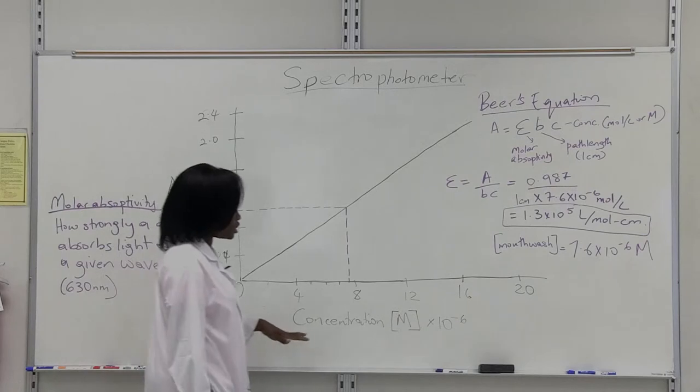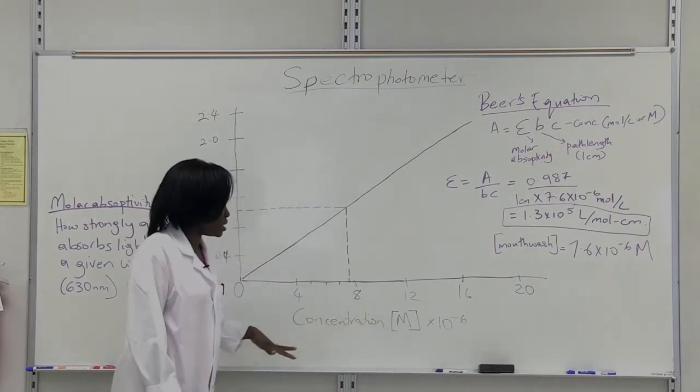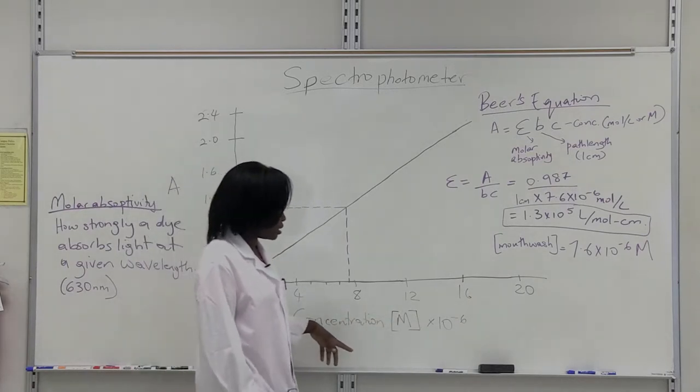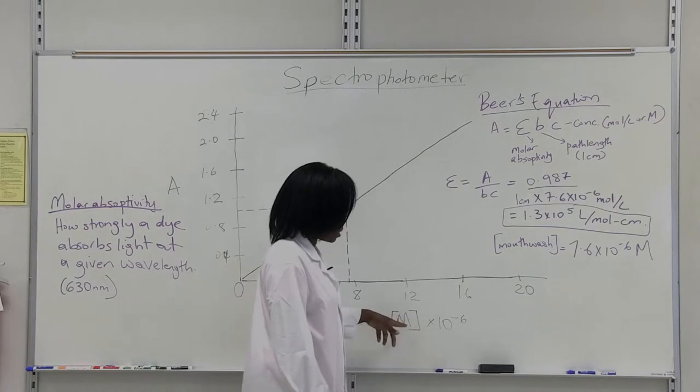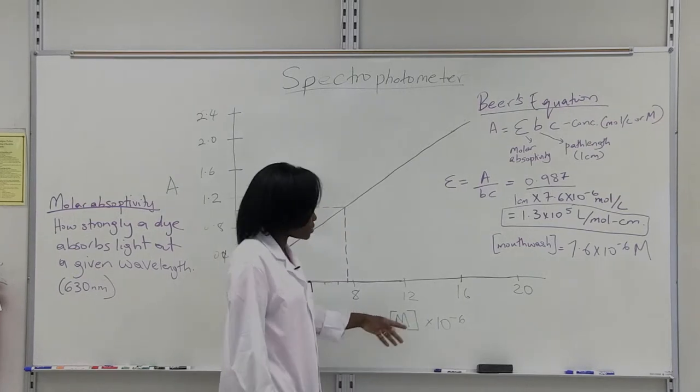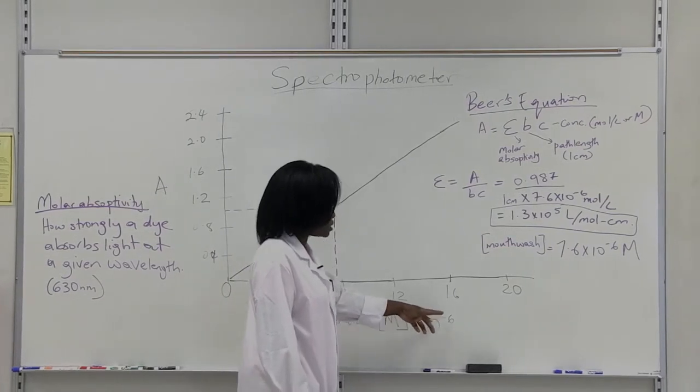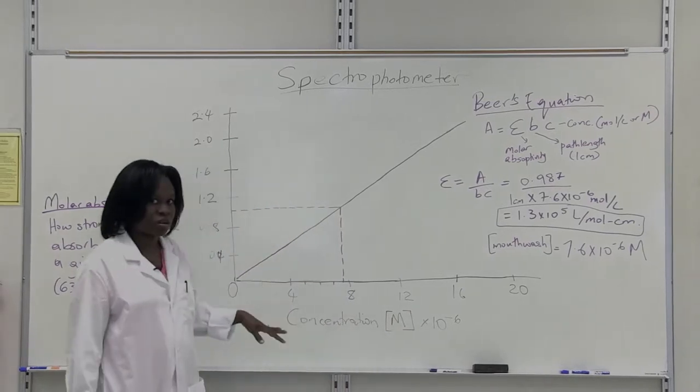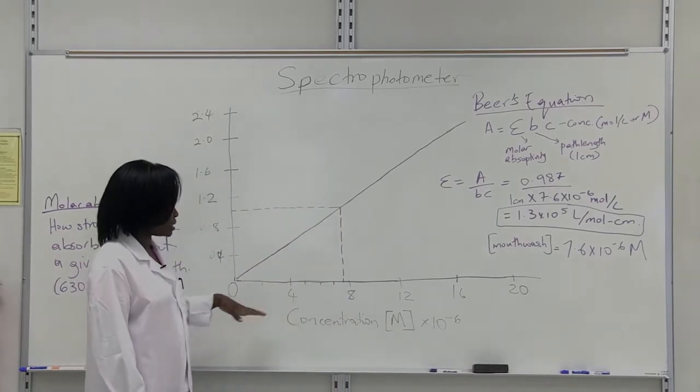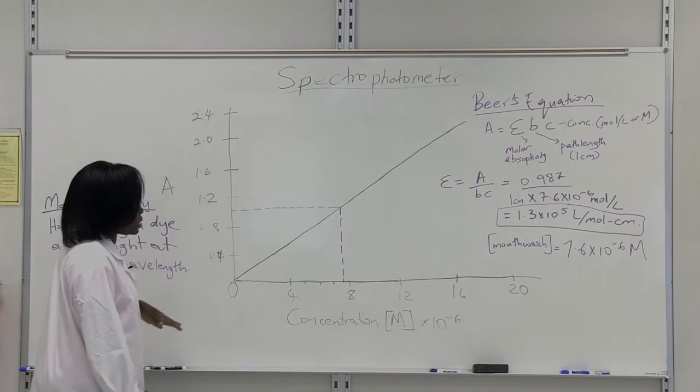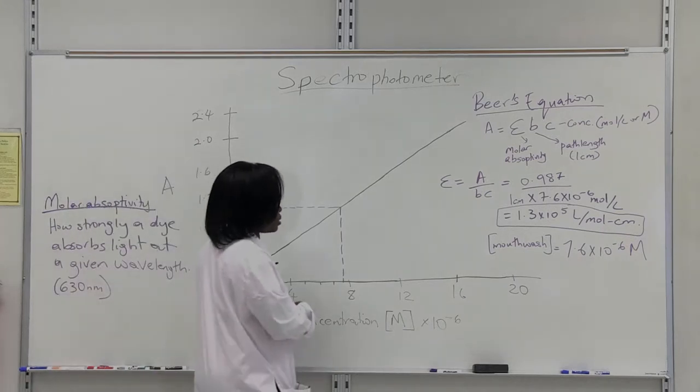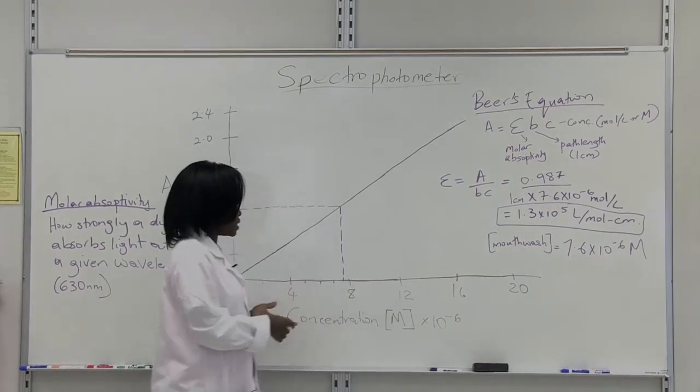And the concentrations, when I did my calculations, the concentrations were actually in molar concentrations, so mole per liter. And they are raised to 10 to the minus 6. So it's a very low concentration of dyes that we're working with. So in order for us to accurately or easily represent it on a graph,